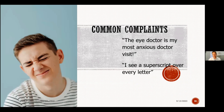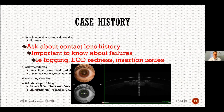Some common complaints that should raise alarm bells for an irregular cornea: the patient is most anxious at eye doctor visits because they can't choose between better one or two; they see superscripts or shadows over every letter on the eye chart — that's early keratoconus. Also ask about contact lens history, including failures like bad fogging, end-of-day readiness issues, or insertion problems.